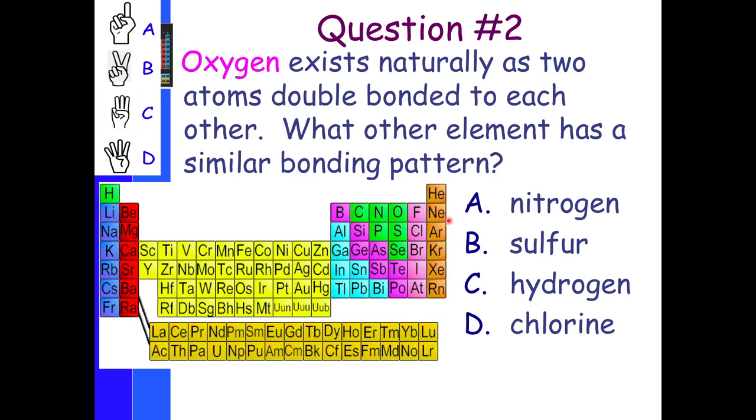Question two. Oxygen exists naturally as two atoms double bonded to each other. What other element has a similar bonding pattern? Is it going to be nitrogen, sulfur, hydrogen, or chlorine? Well, it's probably going to be sulfur. Here's oxygen. And then is it going to be nitrogen, sulfur, hydrogen, or chlorine? It's probably going to be sulfur because it has a similar bonding pattern. It's going to be the one in the same group. The one has a similar electron structure. Because the ones in the same group have similar electronic structures.